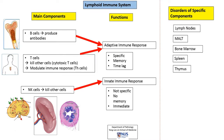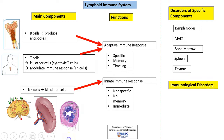In the thymus, there is a spectrum of disorders including developmental disorders. There are conditions such as DiGeorge syndrome, myasthenia gravis, and there are also neoplasms in the thymus, which include germ cell tumors, lymphomas, as well as thymomas. In addition to abnormalities in specific lymphoid tissue types, there can also be functional abnormalities, and these are grouped into immunological disorders.